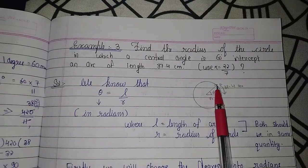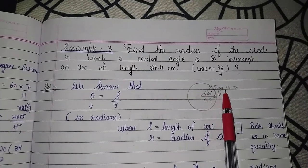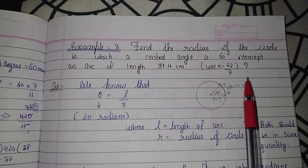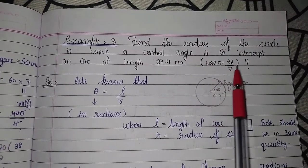The arc of the circle is 37.4 cm. In the last question we didn't have a particular value, but in this question we will have a particular value.